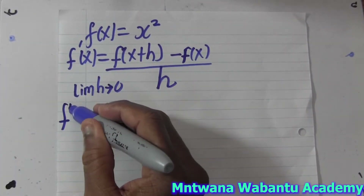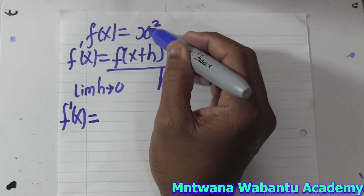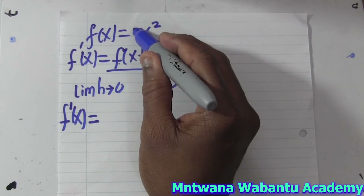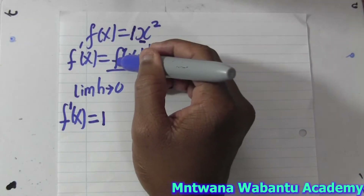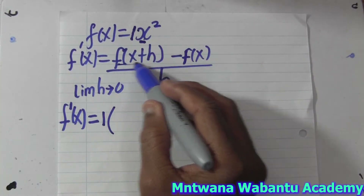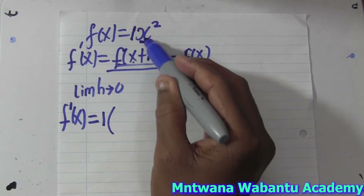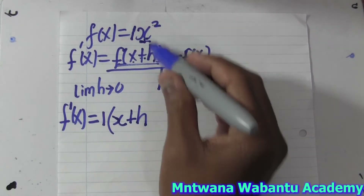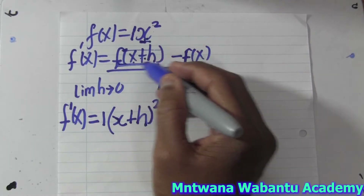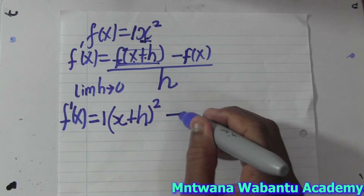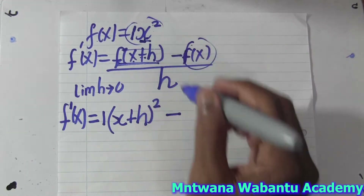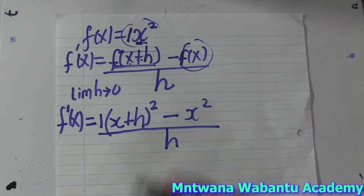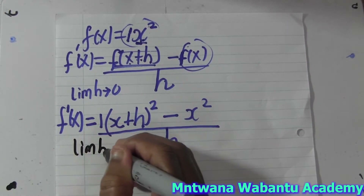So now we say f prime equals — f is the number before x, which is one here since there's no number written. So f is 1, and then put your bracket. Whenever there's an x you must add h, so x becomes x+h, and then square it because you have to follow the formula. Then minus f(x), which is x², over h, limit h approaches zero.